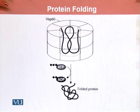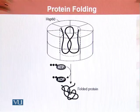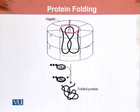This is the diagrammatic representation of HSP 60. We can see that it is a barrel-shaped structure here, with different parts. Here the protein enters the barrel.